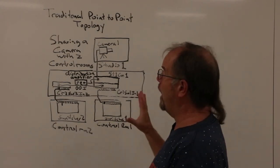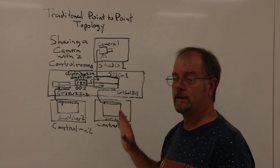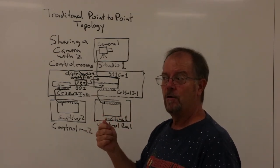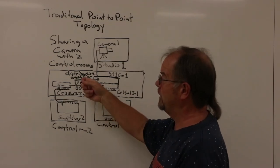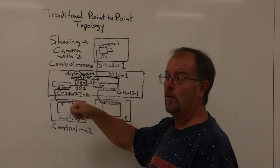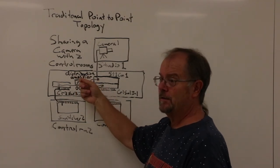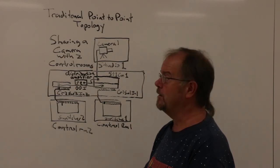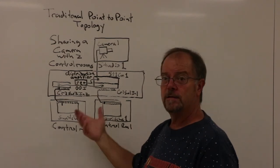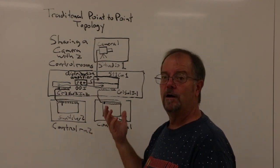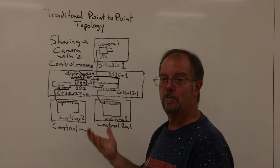The drawback with point-to-point wiring is that when you want to make a change, you either have to repatch something or sometimes you have to insert equipment like distribution amps. This also could be a cross-connect switch or a distribution switcher, different devices that do sort of the same thing. This is the way a traditional wiring infrastructure for a traditional production studio works.